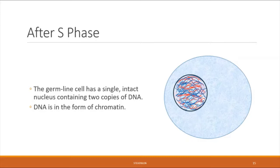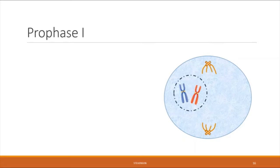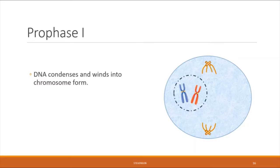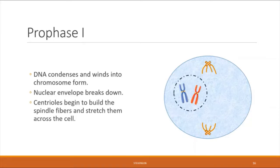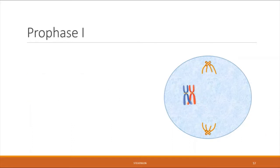Remember, there are two divisions in meiosis, so we start with meiosis one. Every step will have a number after it — so here we're talking about prophase one, and later prophase two. Prophase one in many ways looks like prophase in mitosis: the chromatin condenses into chromosomes, the nuclear envelope starts to break down, and the centrioles begin to build the spindle fibers, which you can see happening in orange. But there's something different about prophase one — a phenomenon called crossing over.